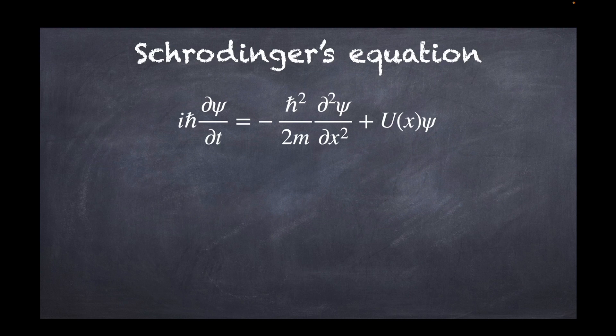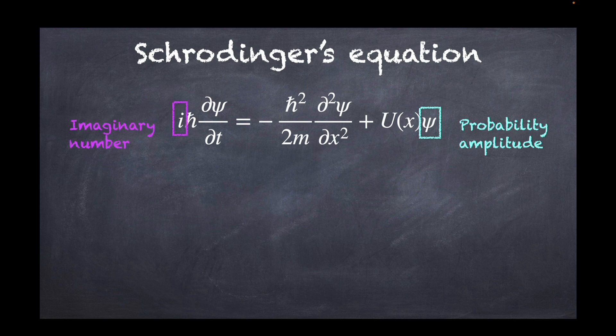Okay, so let's go back then to Schrödinger's equation. Here this is the expression of Schrödinger's equation in 1D. h bar is the reduced Planck constant, it's just h over 2π. The m here is the mass of the particle you're looking at, and the U here is the potential energy of the particle. Now this quantity psi is the probability amplitude, and the i here is the imaginary number which is such that i squared is equal to minus one.